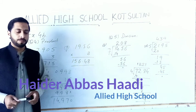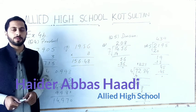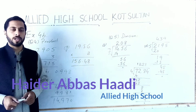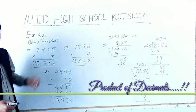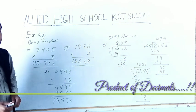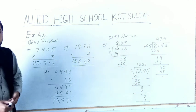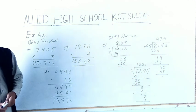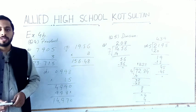Assalamu alaikum, dear students of Allied High School Kursultan. I wish you all will be fine. Today we will move on to exercise 4B and we will solve question number four, which is about the product. We have to calculate the product of two different amounts — product means we have to multiply two amounts.